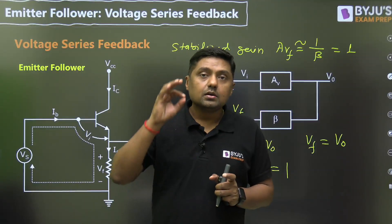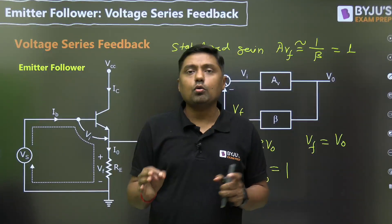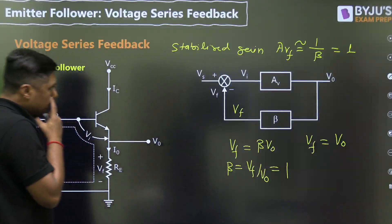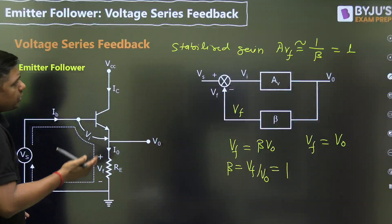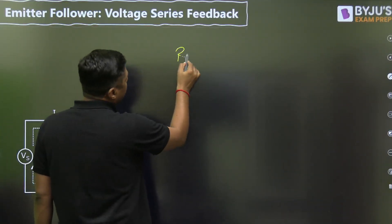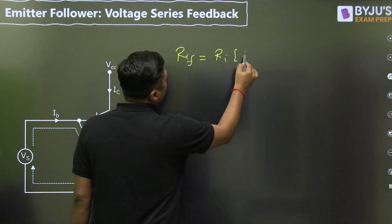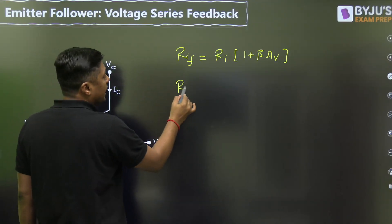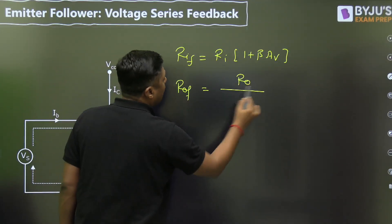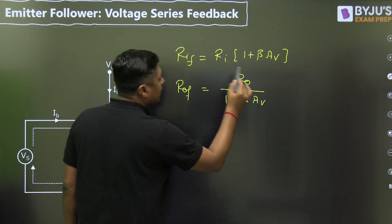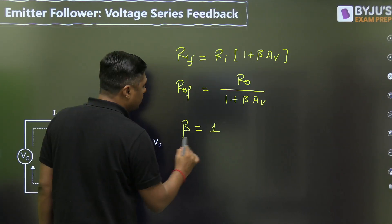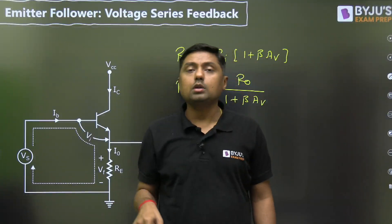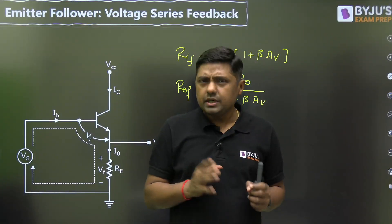In this way we can prove that in the emitter follower, the feedback mechanism is voltage series feedback. Regarding input and output resistance: the input resistance increases by a factor of (1 + β·AV), and the output resistance is R0 divided by (1 + β·AV). For the emitter follower, the value of beta is 1. For these two formulas, you can watch my previous session on voltage series feedback.